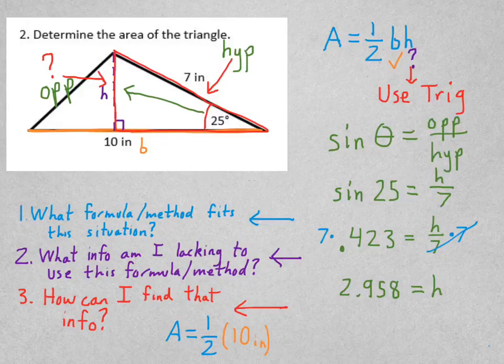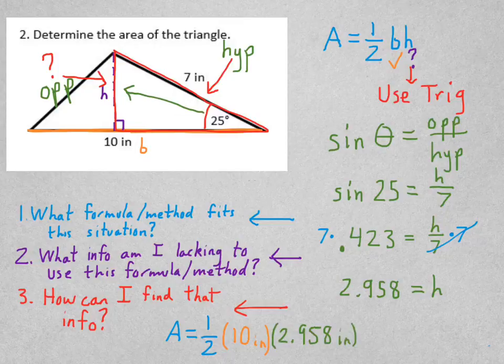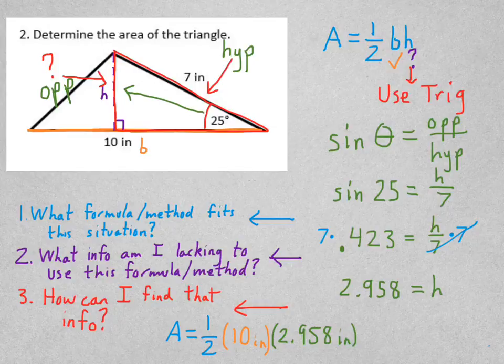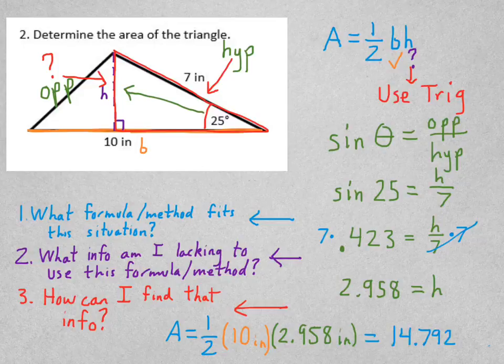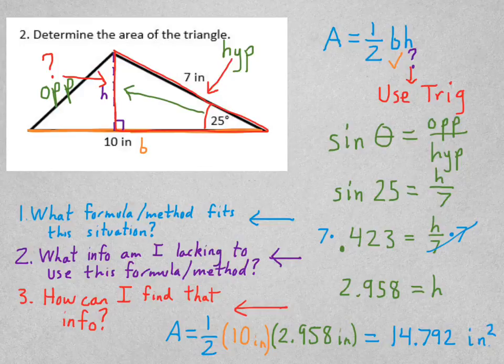So now I can plug in. We've got area equals 1 half times 10, which is the base, and 2.958, which is my height. Remember again, keep all of the decimal places when you plug it in in the calculator. On your paper, you can write down just the 3 decimal places, but in the calculator, use all of them. Then plug that in and I get 14.792 units would be inches times inches is inches squared.